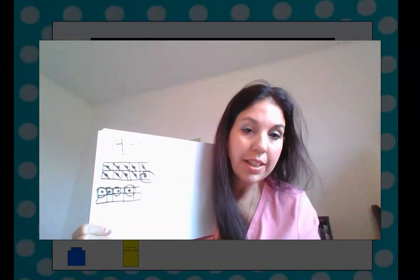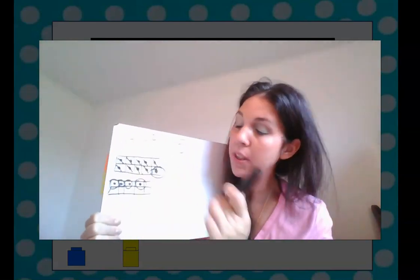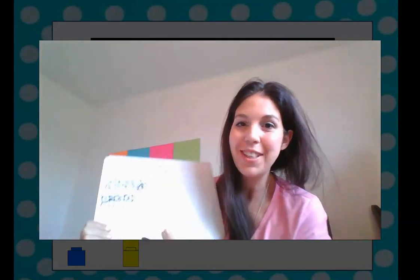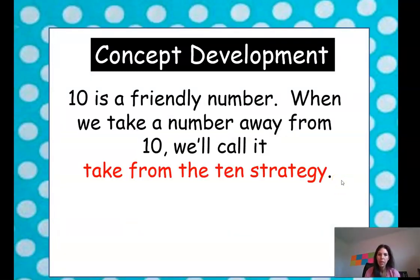So you can do this whether you have blocks or if you have a piece of paper, you can draw it out. Let's look at another problem. 10 is a friendly number. And when we take a number from 10, we'll call it the take away from the 10 strategy. Take from 10 strategy.